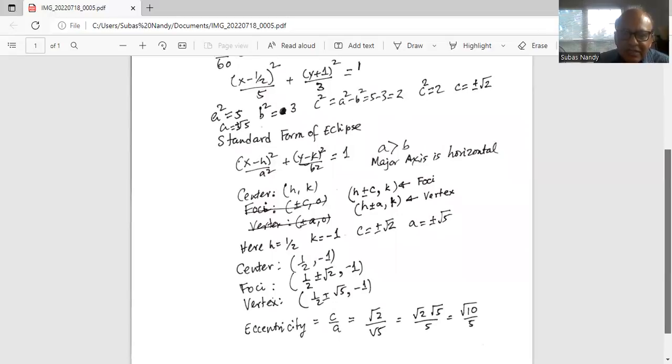So eccentricity is c over a, square root of 2 divided by square root of 5 or square root of 10 divided by 5 when we rationalize the denominator.